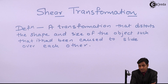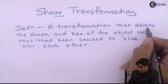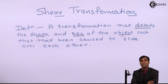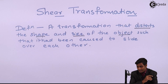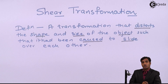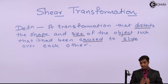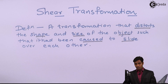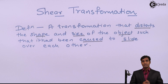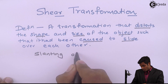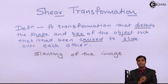A Shear Transformation is a transformation that distorts the shape and size of the object, such that the object will cause to slide over each other. If you apply Shear Transformation, the object will get tilted, which is also called slanting of the image. So, transformation which means slanting of the image is called Shear Transformation.